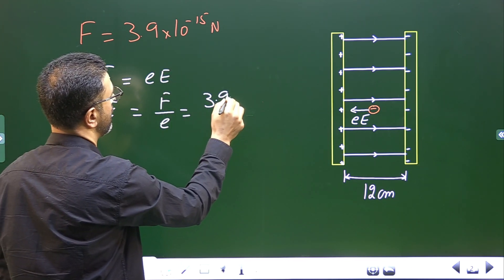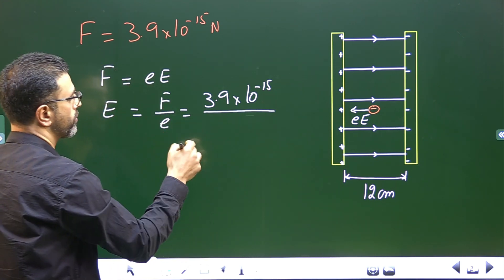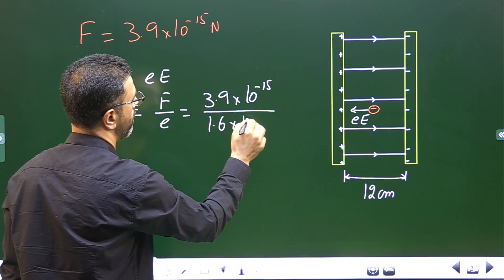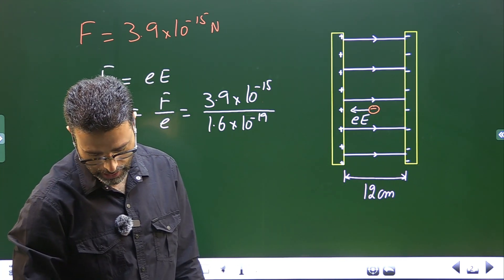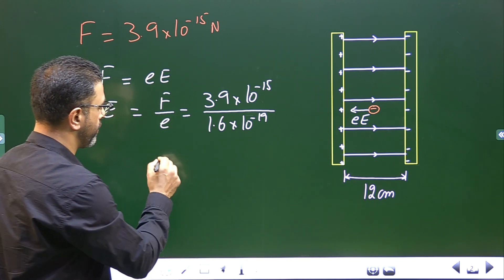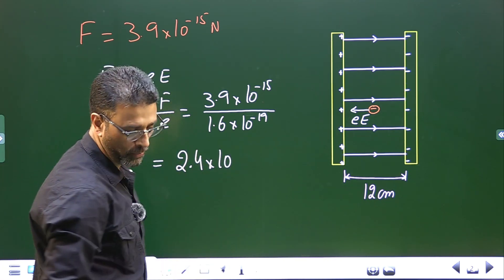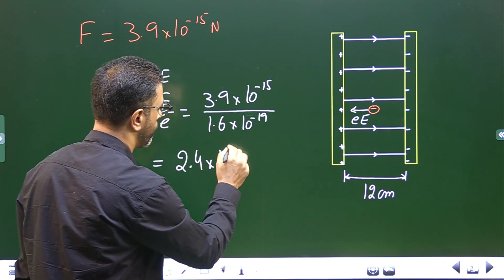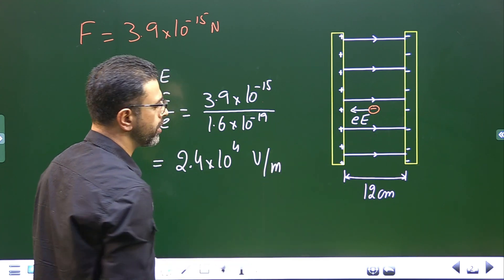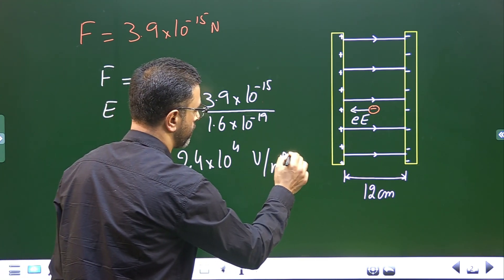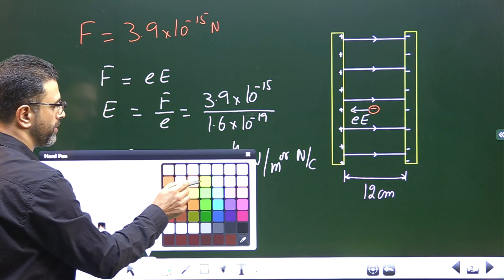Force is given as 3.9 × 10⁻¹⁵ newtons divided by the charge of an electron, which is 1.6 × 10⁻¹⁹ coulombs. This comes out to be 2.4 × 10⁴ volts per meter or newtons per coulomb. Both units are equally correct. So this is the electric field between the plates of the capacitor.